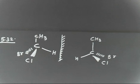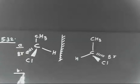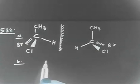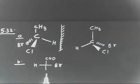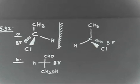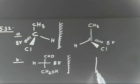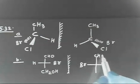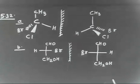Let us discuss the next problem. Molecule B is an easy one. You have CHO here, Br here, hydrogen, and then CH2OH. Draw the mirror image of this compound — that is the enantiomer if possible. Taking the plane mirror: Br is here, CHO is here, H, and CH2OH. This is the enantiomer of this compound.